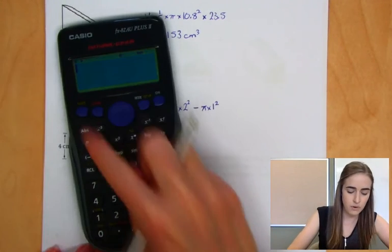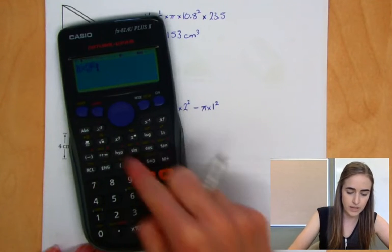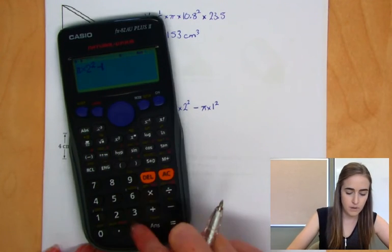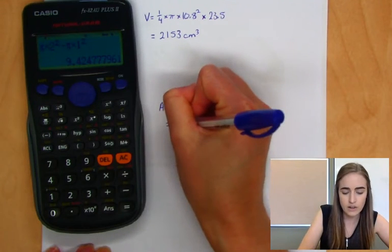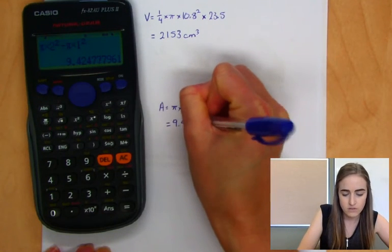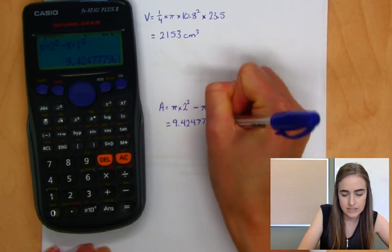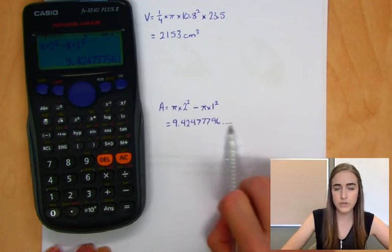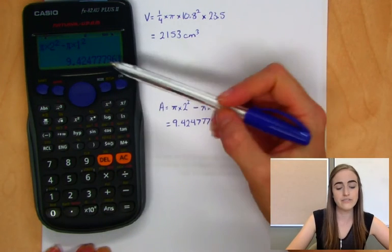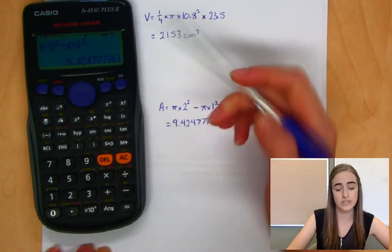Which would be equal to pi times 2 squared minus pi times 1 squared, which would give us... And we're going to write that whole thing down for a second. 9.42477796... And those numbers would keep going as well. They'd go on forever. So we'll just put those dot dot dots there. And we're going to leave this number here because we're going to keep using that.